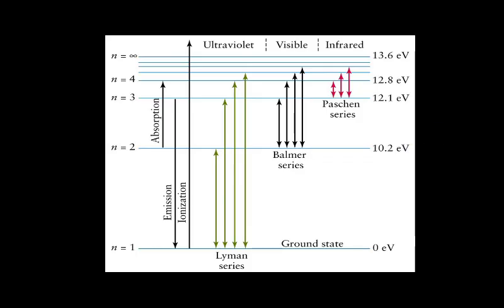Here you can see in the picture — the green lines represent when electrons come from n=4, 3, 2 to n=1, meaning from higher orbits to orbit number one. When the electron jumps from any higher orbit to orbit number one, you get the Lyman series, and the values of the frequency lie in the ultraviolet region.